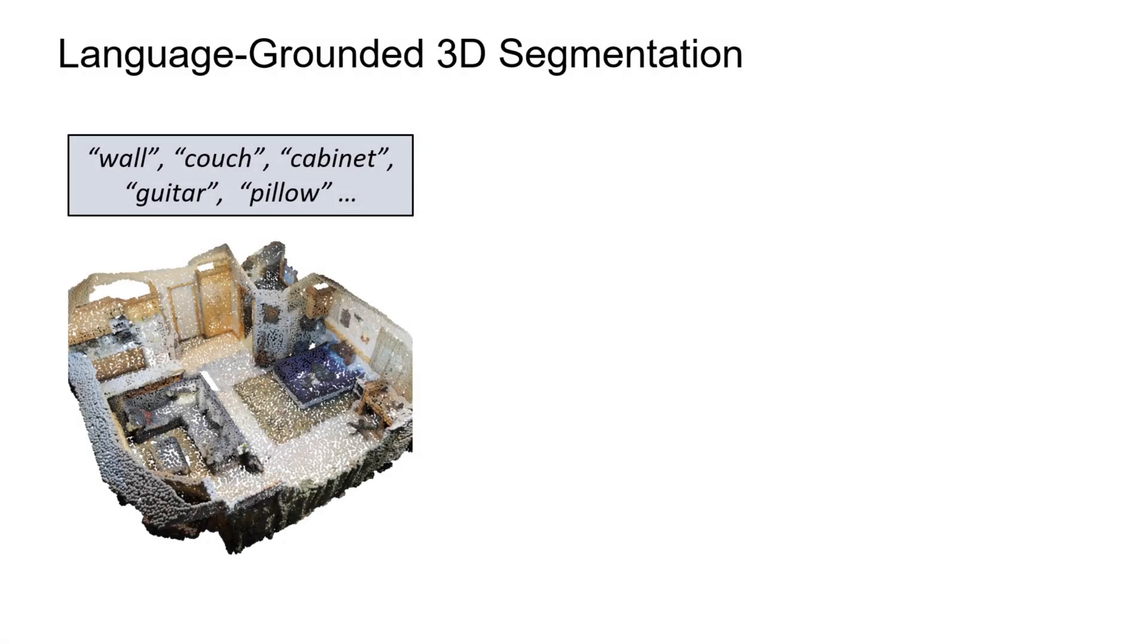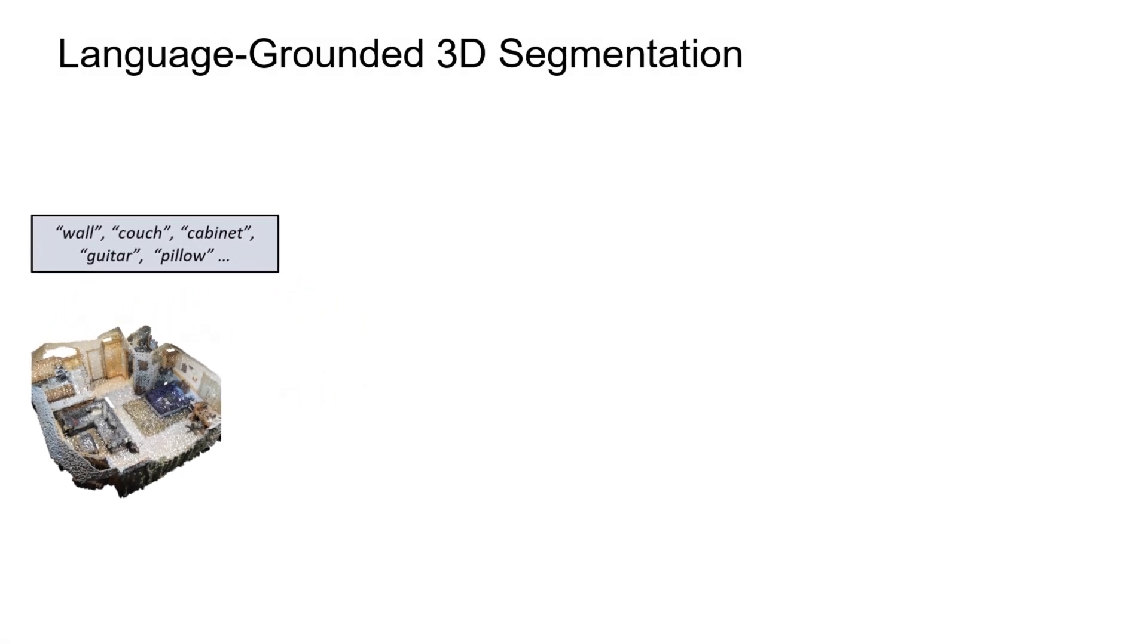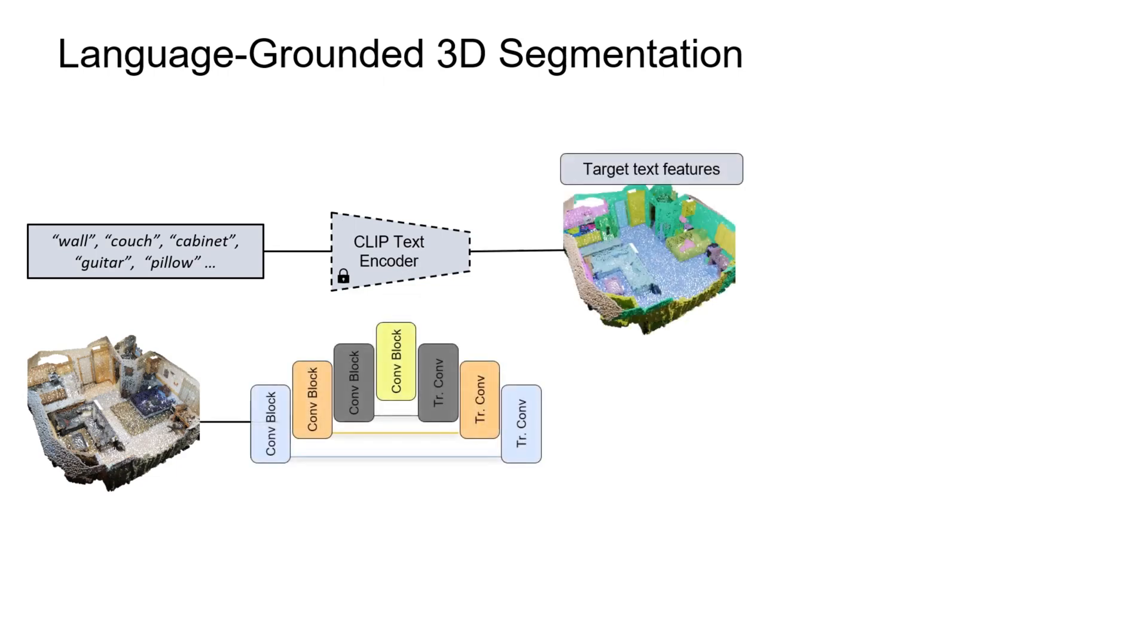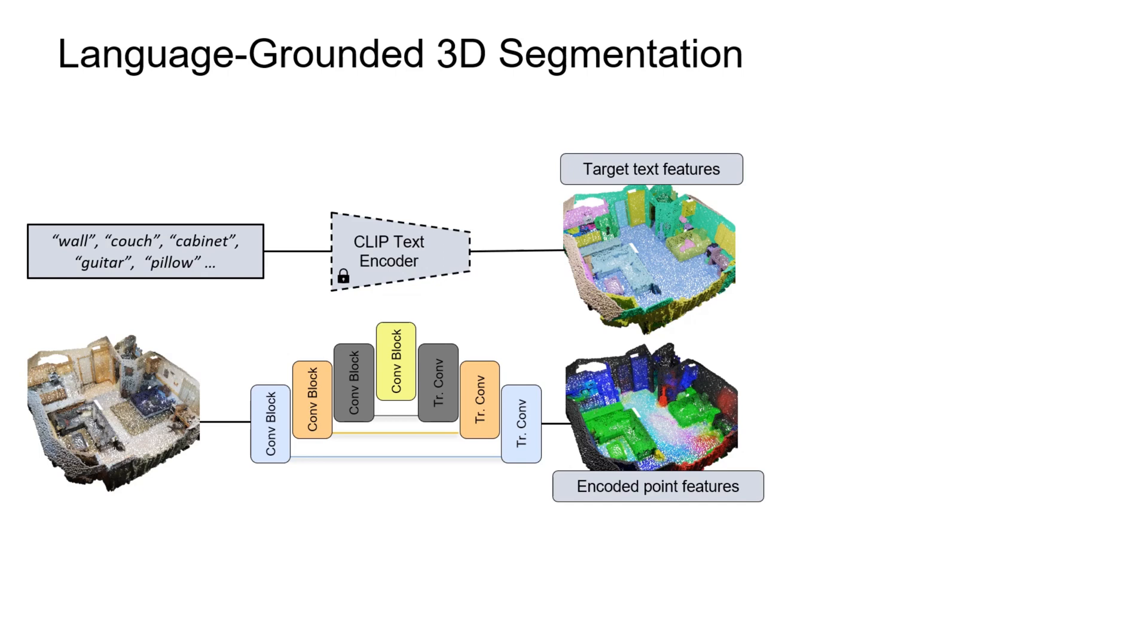Geometric feature learning with imbalanced labels leads to poor representations. We propose to enhance the learned representations by aligning them to a semantically rich feature space of a language encoder. Using a pre-trained CLIP model, we extract feature embeddings for ScanNet 200 categories and use them as target features to guide learned 3D features in a 3D point-to-language contrastive objective.